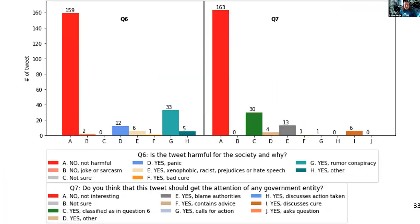For example, for the question 'is it harmful to society and why?' — the binary task would just be yes or no, harmful or not. The fine-grained task requires predicting not just yes, but specifying why: it's harmful because it promotes a bad cure, or because it spreads panic, or because it spreads rumors.